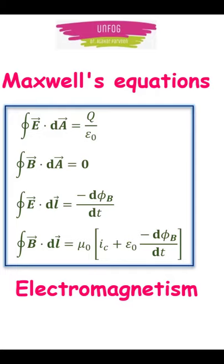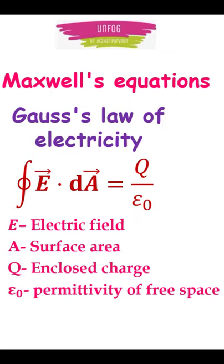The four Maxwell's equations explain the complete electromagnetism. The first law is Gauss's theorem of electricity, which says that electric field and charge cannot exist without each other, and the electric field lines do not form a continuous closed path.